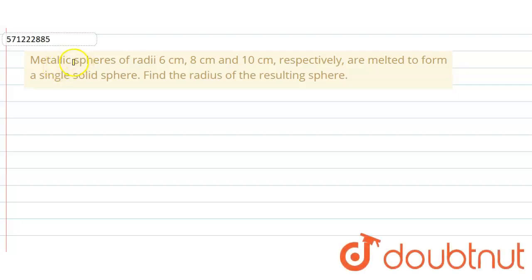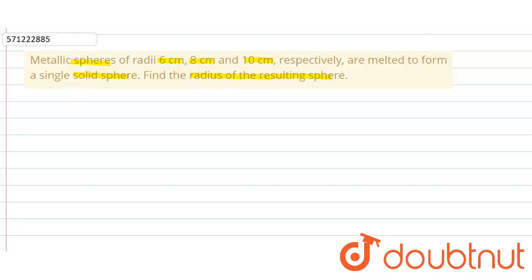In the given question, metallic spheres of radius 6 cm, 8 cm and 10 cm respectively are melted to form a single solid sphere, and we have to find the radius of this resulting sphere. Here we know that the volume of all three spheres will be equal to the volume of the bigger sphere.